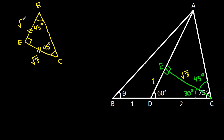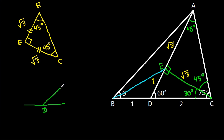AE will be root 3, and this angle will be 45 degrees. Now, if we join BE, then at point D this angle is 60 degrees, so this angle will be 120 degrees.